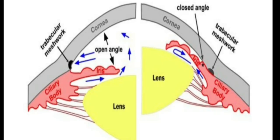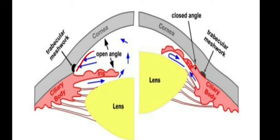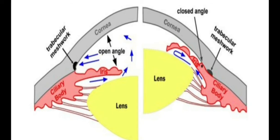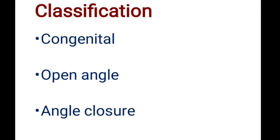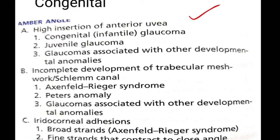Now classifying glaucoma based on mechanisms of outflow obstruction: in congenital glaucoma, it was initially thought that a membrane-like structure called Barkan's membrane in the anterior chamber angle caused obstruction. Later, additional mechanisms were identified — high insertion of the iris directly over the trabecular meshwork, incomplete development of the trabecular meshwork, and iridocorneal adhesions. These account for congenital and infantile glaucoma, juvenile glaucoma, and developmental anomalies like Axenfeld-Rieger syndrome, Peters anomaly, and aniridia.